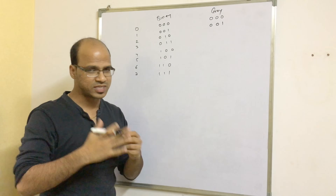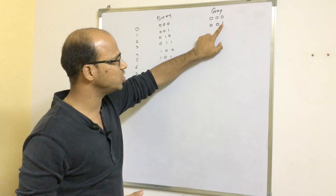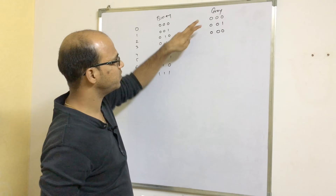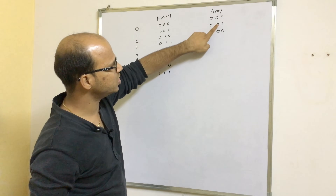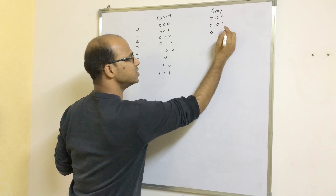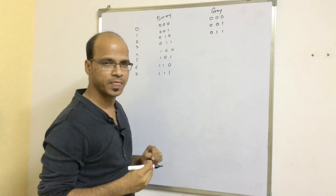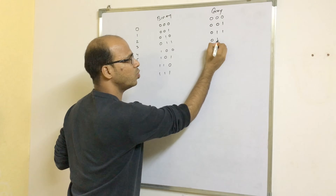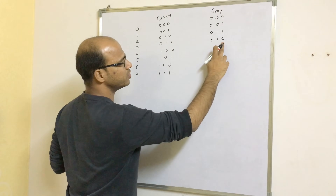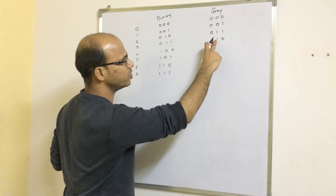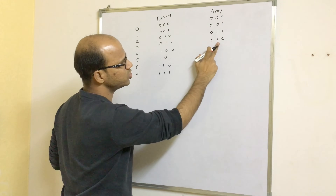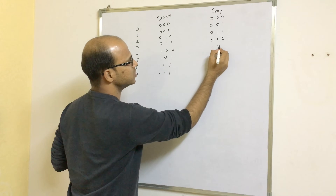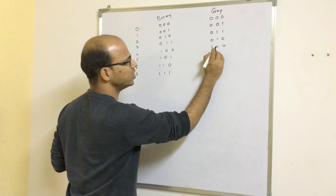For the second number, can we change the last bit again? If we change the last bit it becomes 000, which repeats. So instead we change the second-last bit — the last two bits remain the same — giving us 011. For the next, change the last one: 010. Then we want to change the second-last, but that would give 011, which repeats. So we must change a different bit.